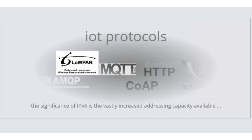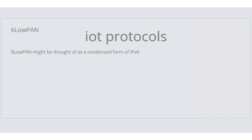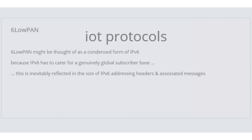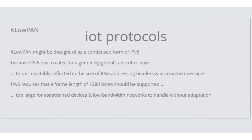The significance of IPv6 is the vastly increased addressing capacity available, which means that many more devices can now be directly addressed on the Internet. Because IPv6 has to cater for a genuinely global subscriber base, this is inevitably reflected in the size of the IPv6 addressing headers and associated messages. IPv6 requires that a frame length of 1280 bytes should be supported, which is too large for constrained devices and low bandwidth networks to handle without adaptation.